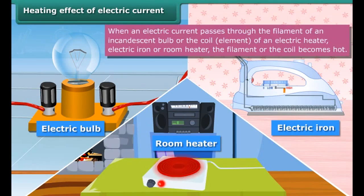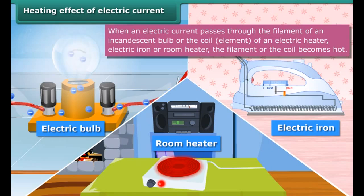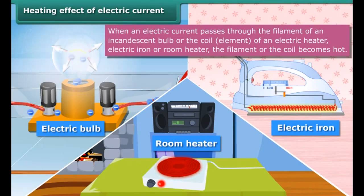When an electric current is passed through a metallic wire — like the filament of a bulb or the coil of an electric heater, geyser, electric iron, or room heater — the coil becomes hot and glowing. This is known as the heating effect of electric current. In this condition, they radiate heat and light.